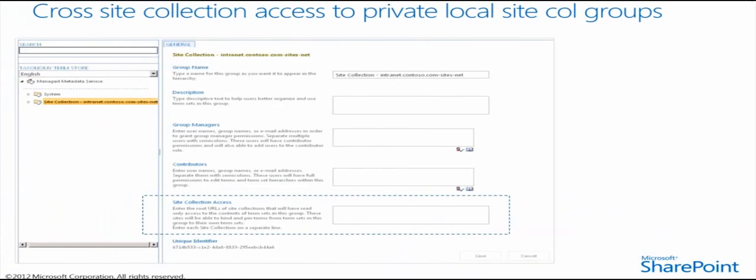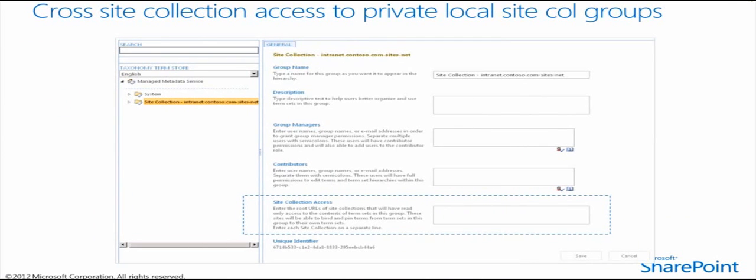Let's have a closer look from a UI perspective at these individual settings. The cross-site collection access for private local site collection groups is something which we can set at the site collection term set level, using the specific site collection access text box within the term set UI. By setting a URL there — for example, http://www.contoso.com — whatever terms are created in this particular site collection would also be visible on that other site collection.